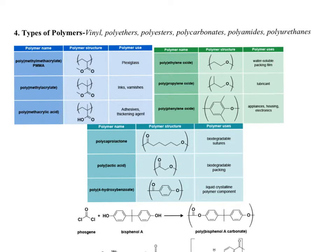Ethylene oxide - water-soluble packing film. Put a carbon there, all of a sudden it becomes a lubricant. Ethylene oxide is used in appliances, housing, electronics, all sorts of different things. It's fascinating to me that small chemistry molecular changes can give you very different physical properties.